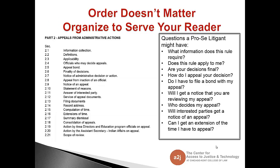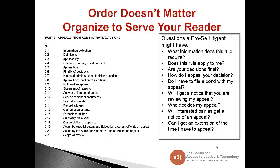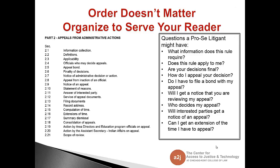This section on order doesn't matter and organizing to serve your reader is especially important when creating your A to J Guide interview. The form doesn't have to dictate how you gather information from your end user. For example, a table of contents from a regulation about how to appeal an administrative action should be organized around the pro se appellant's questions: Does this apply to me? Are decisions final? Do I have to file a bond to appeal? Will I get notice that you're reviewing my appeal? Who decides the appeal? Can I get an extension of time? Think of your end user and all of the things they might be thinking about as they complete the form.